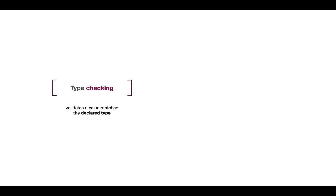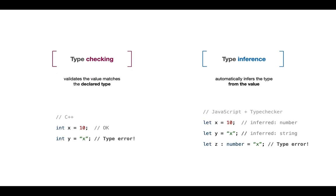In type systems we also talk about type checking and type inference. The simplest example is variable declaration. In C++ we have to define the type together with the variable and cannot assign an incorrect value. However with JavaScript and an optional type checker, we can infer the type — we say the type of x should be number because its initializer had type number, and same for string. Once we annotate a variable declaration with a type, that inference is followed by type checking.